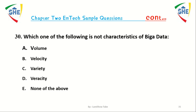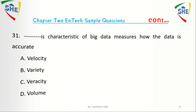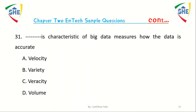Question number 31: Dash is a characteristic of big data which measures how accurate the data is. A) Velocity, B) Variety, C) Veracity, D) Volume.